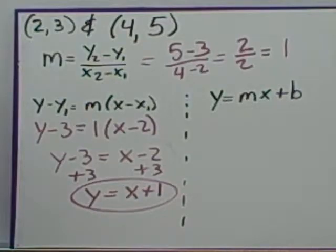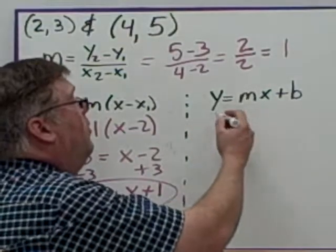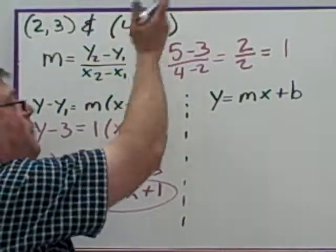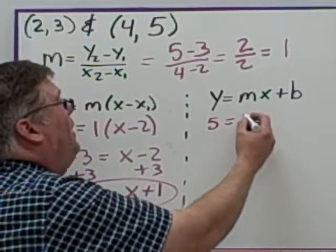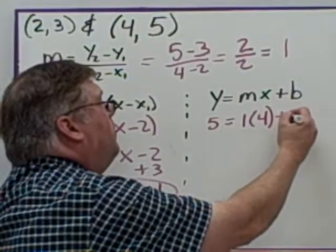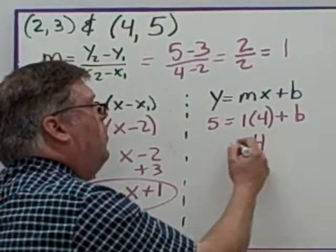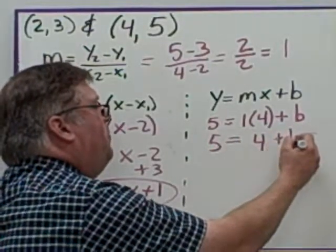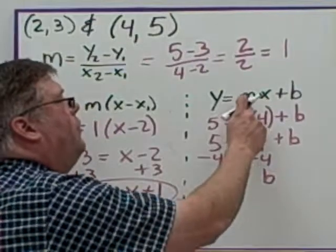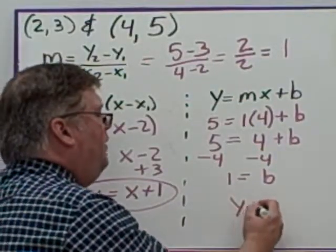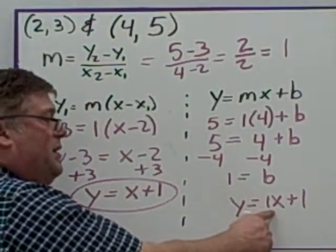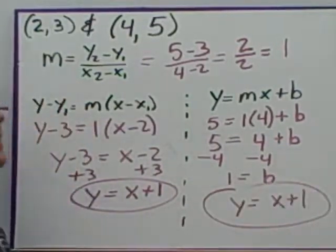Starting directly with y equals mx plus b and using the point (4, 5): plug in 5 for y, slope 1 for m, and 4 for x. Then 5 equals 1 times 4 plus b, so 5 equals 4 plus b, and subtracting 4 gives b equals 1. With slope 1 and y-intercept 1, the equation is y equals 1x plus 1, which simplifies to y equals x plus 1 — the same answer.